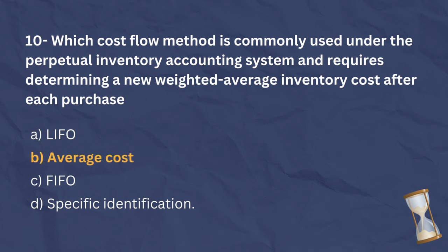The average cost method used under the perpetual inventory accounting system requires calculating the weighted average inventory cost after each purchase. This cost is then used for every sale until the next purchase occurs.